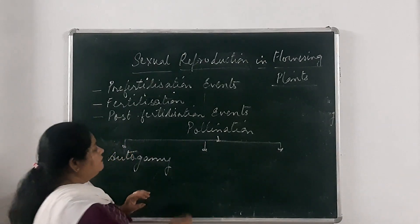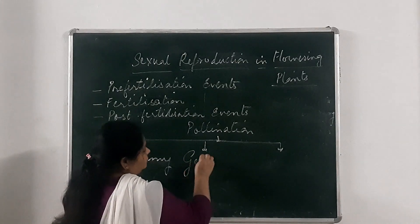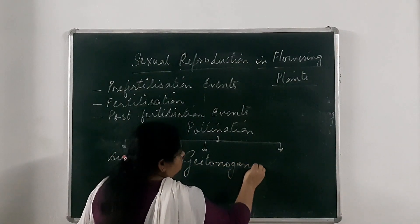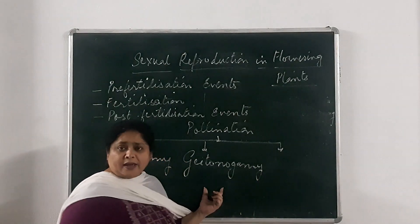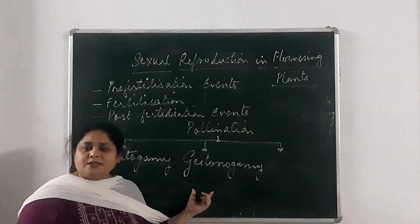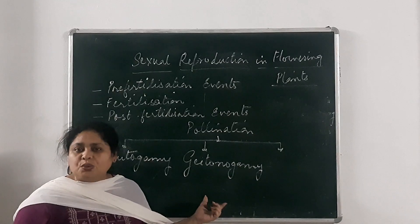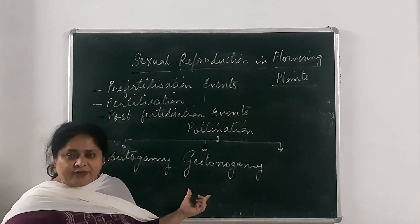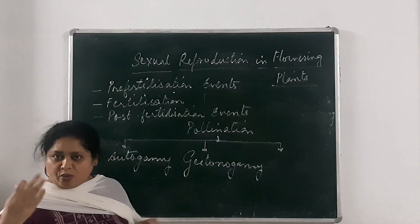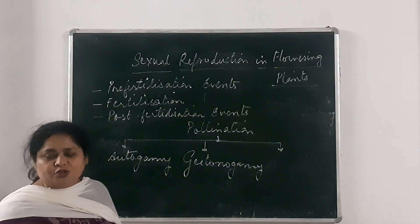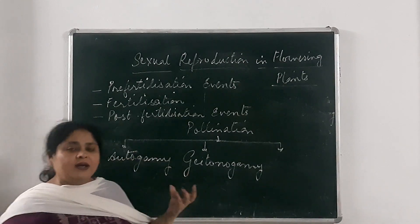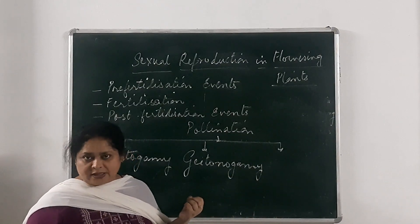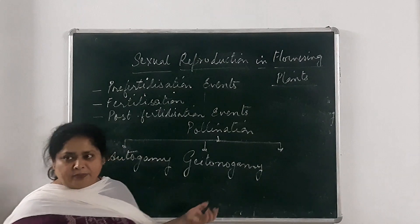The second type is geitonogamy. Geitonogamy means the transfer of pollen grains between two different flowers of the same plant. One flower has pollen grains, it spreads them, and the second flower of the same plant receives the pollen grains of its own kind. This is known as geitonogamy.